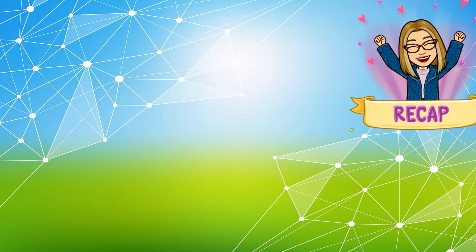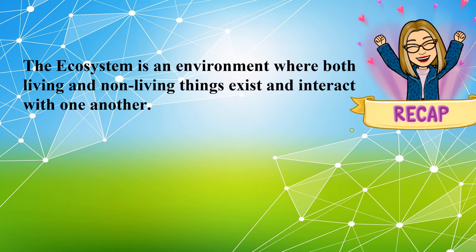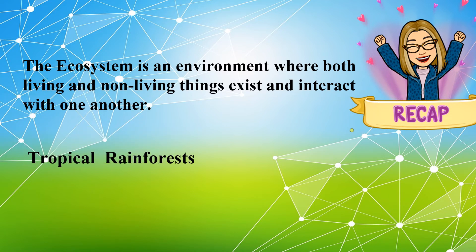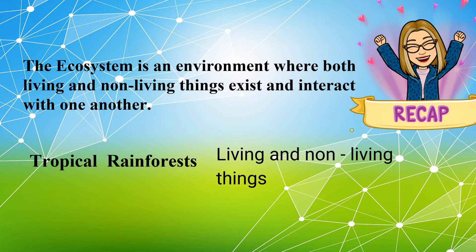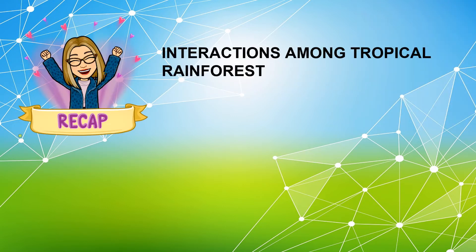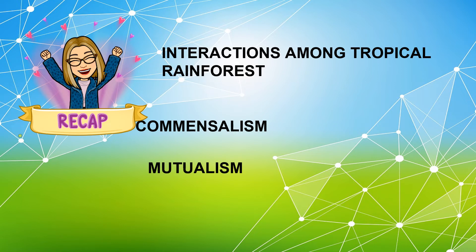Did you learn something today? Let us have a recap. The ecosystem is an environment where both living and non-living things exist and interact with one another. The tropical rainforest is one example of an ecosystem. The living things in the rainforests are plants and animals, while the non-living things are soil, water, sunlight, and humidity. The interactions among tropical rainforests are: commensalism, mutualism, competition, and predation.